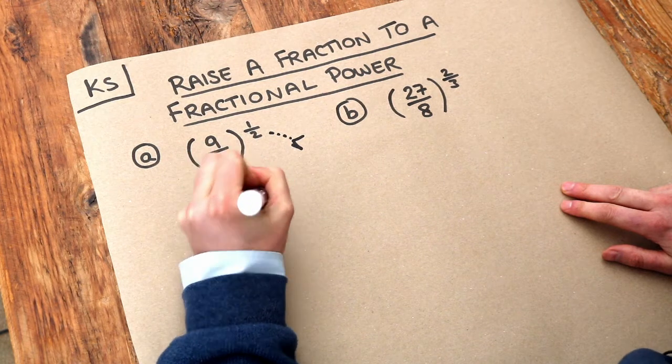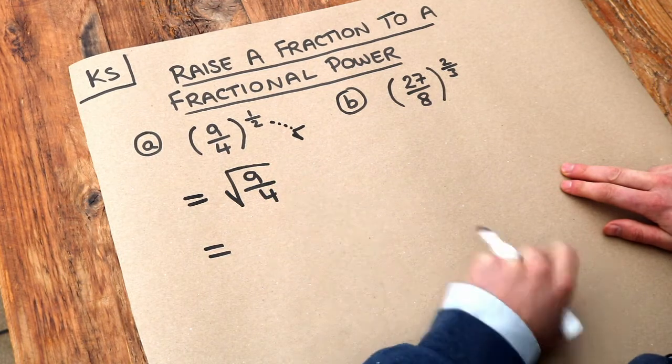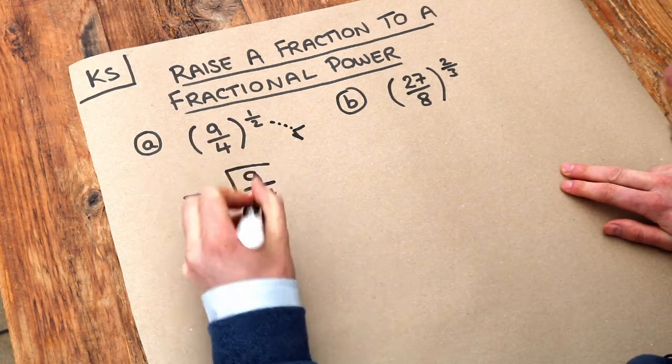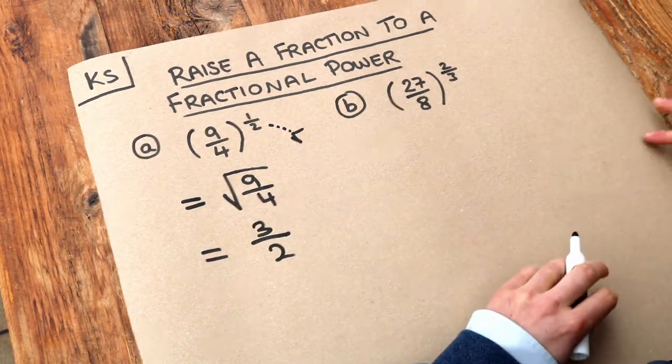So the square root of 9 over 4. Now if you square root a fraction, you've just got to square root the numerator and square root the denominator. So the square root of 9 is 3 and the square root of 4 is 2. And that's the final answer.